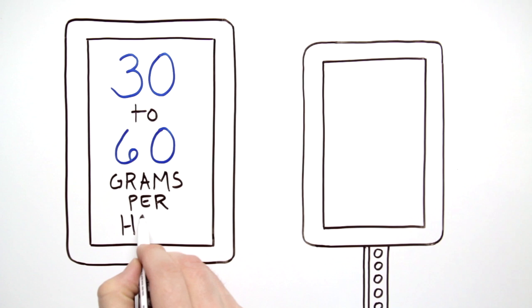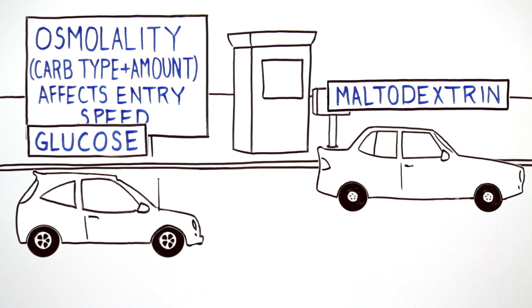Experts recommend consuming 30 to 60 grams of carbohydrates per hour to fuel the muscles and brain during exercise.